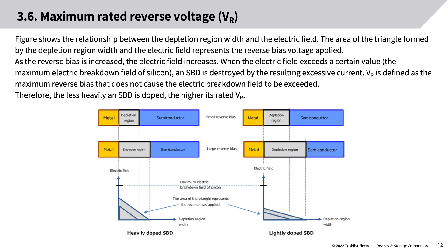The area of the triangle formed by the depletion region width and the electric field represents the applied reverse bias voltage. As reverse bias increases, the electric field increases. When the electric field exceeds the maximum electric breakdown field of silicon, the SBD is destroyed by excessive current. VR is defined as the maximum reverse bias that does not cause the electric breakdown field to be exceeded. Therefore, the less heavily an SBD is doped, the higher its rated VR.